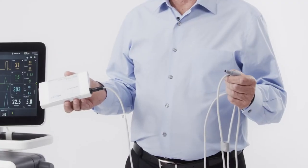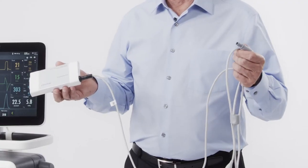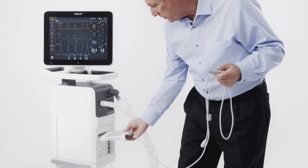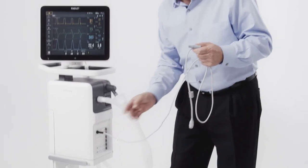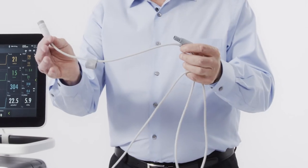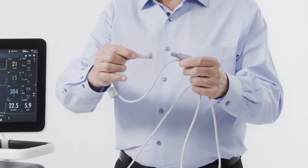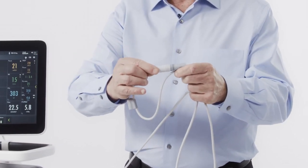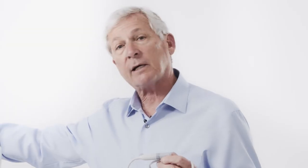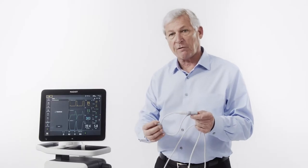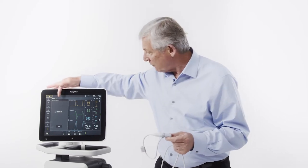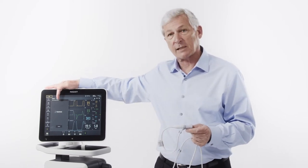We will now be required to perform an EDI module function check. We'll do this simply by inserting the EDI module into the ventilator, taking the NAVA cable and plugging it into the test port. The ventilator will recognize that we have plugged this into the test port and it will automatically perform the function test. It will also inform us that we've passed the test.